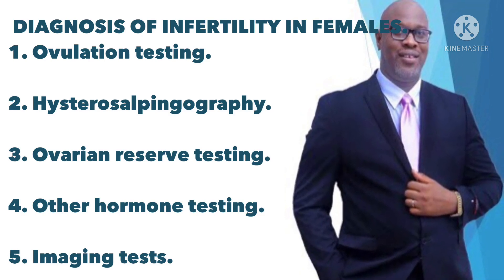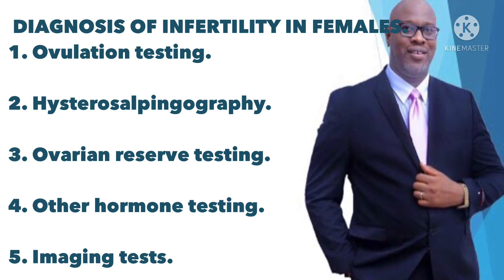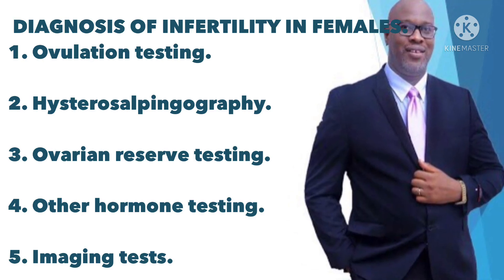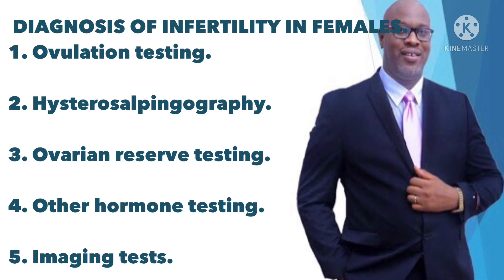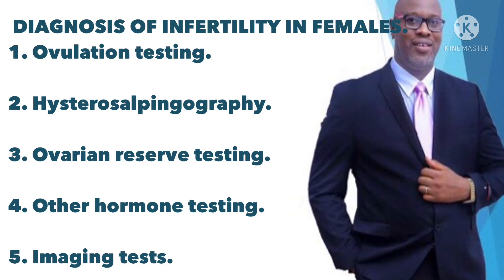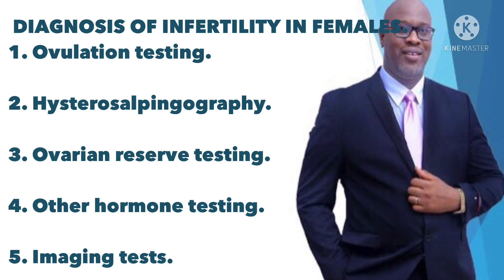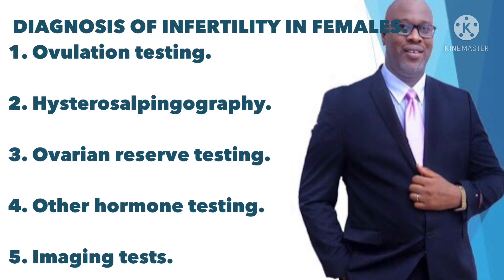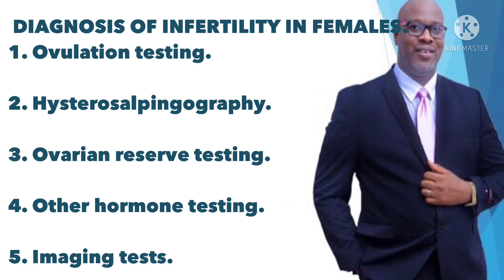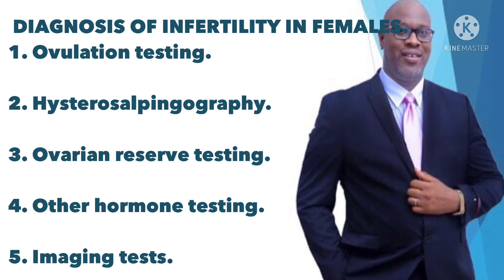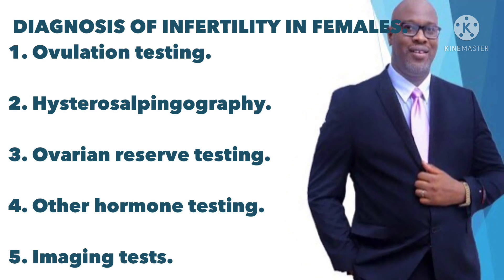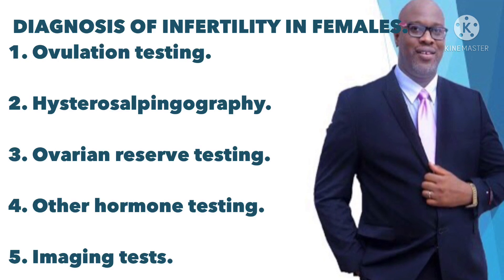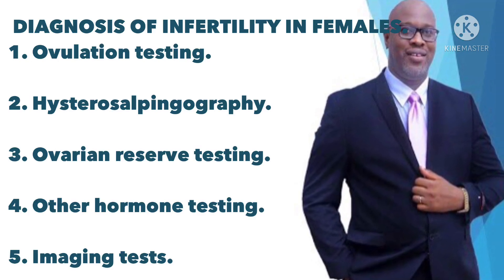2) Hysterosalpingography — this involves the injection of an X-ray contrast into the uterus. This takes an X-ray of the uterus which can be used to detect abnormalities in the uterine cavity. If abnormalities are found, there will likely be need for further evaluation. 3) Ovarian reserve testing — this test helps determine the quality and quantity of eggs available for ovulation. Women at risk of a depleted egg supply, including women older than 35, may need to have this series of blood and imaging tests.